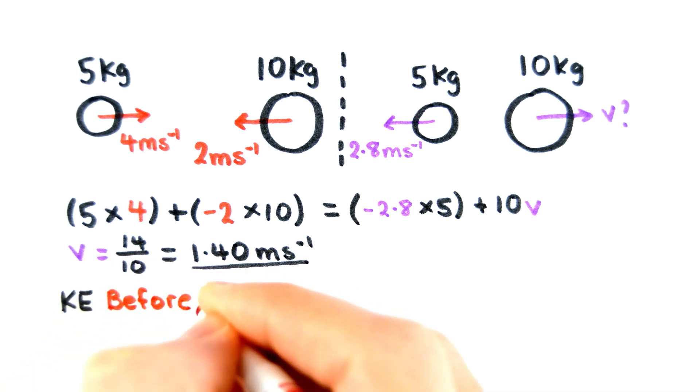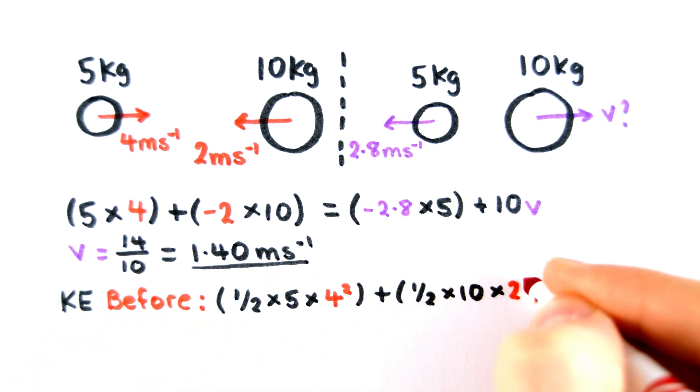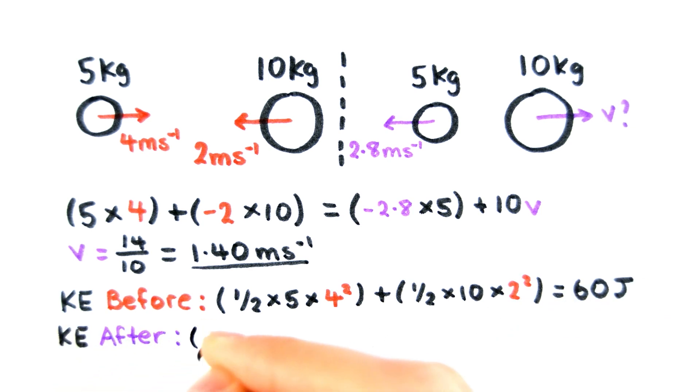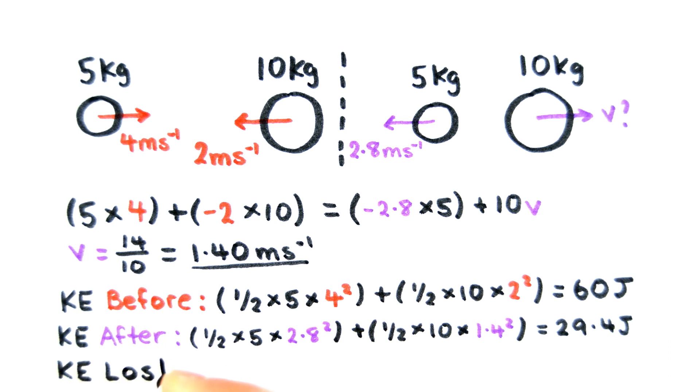Before the collision, the kinetic energy was 60 joules. After the collision, the kinetic energy was only 29.4 joules. This means there was a loss of 30.6 joules of kinetic energy. So the collision was inelastic.